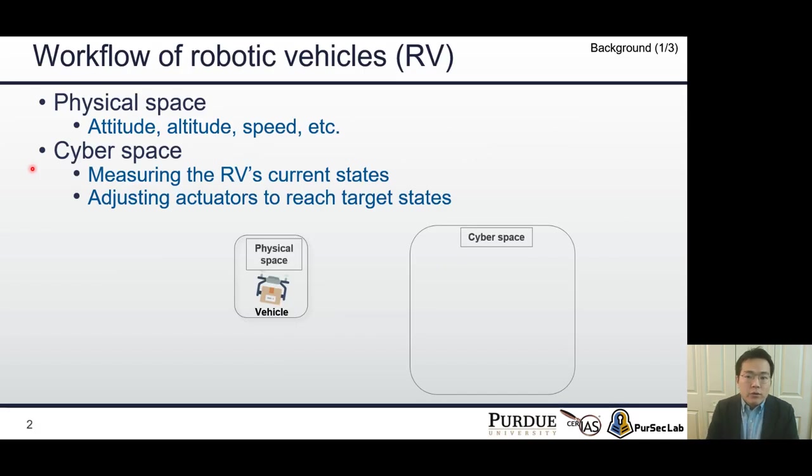I would like to briefly introduce the workflow of robotic vehicles. Robotic vehicles are operated in two different spaces: physical and cyberspace. Physical space shows the RV's physical state, such as the vehicle's altitude and speed. On the other hand, the cyberspace is for changing the physical state to target state.